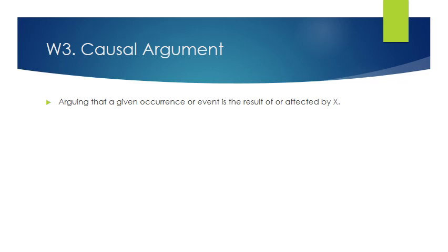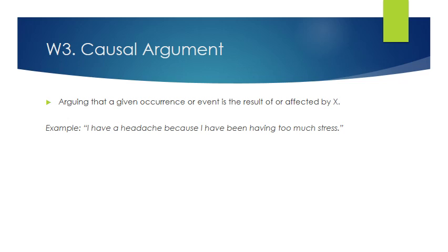W3 is the causal argument — the idea that a given occurrence or event is the result of a previous event, which we'll call factor X. Causal reasoning is the most complex of the different forms of warrants; there's a whole field in philosophy dedicated to what causality is, when something is considered a cause, and when something is considered an effect. A basic example: 'I have a headache because I've been having too much stress' — claim: headache; data: too much stress; warrant: stress causes headaches.